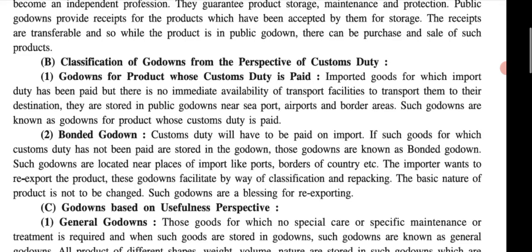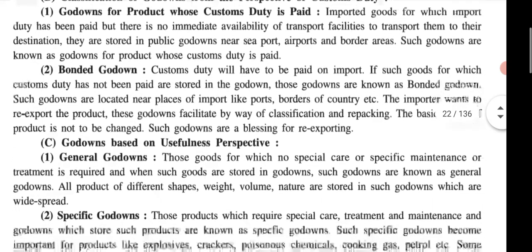The next one is the bonded godown. Custom duty will have to be paid on import goods. If such goods' custom duty has not been paid, they are stored in a bonded godown. Goods for which custom duty does not need to be paid at the time of storage in the godown — that is the bonded godown.